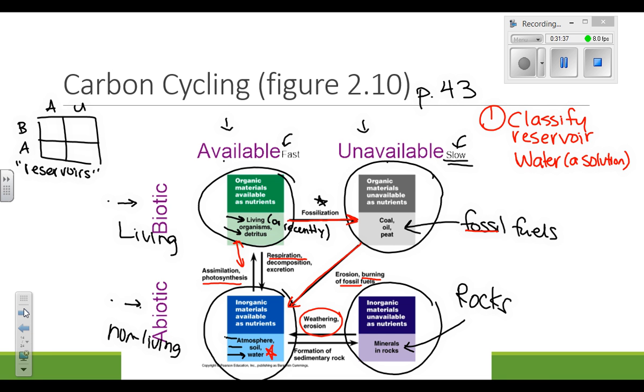And it's down here. So if I said, where does the carbon that's dissolved in water get classified, you would say available, abiotic. So if I asked you to classify something's reservoir, I would look for two words, either available or unavailable, and then biotic or abiotic.